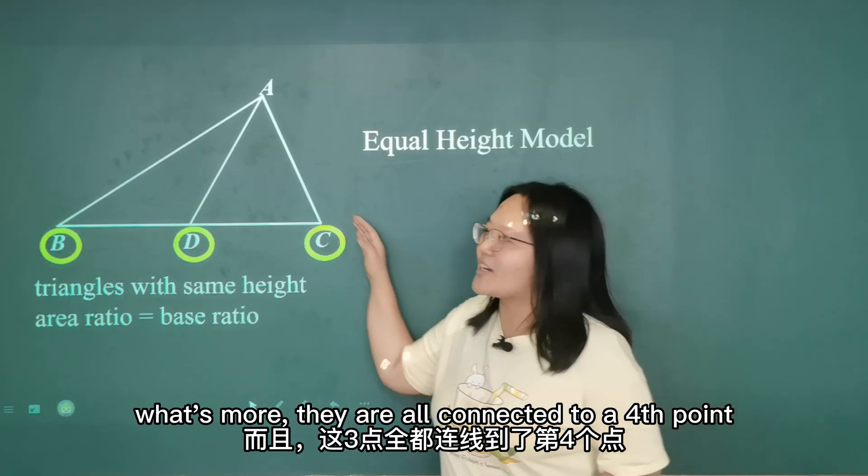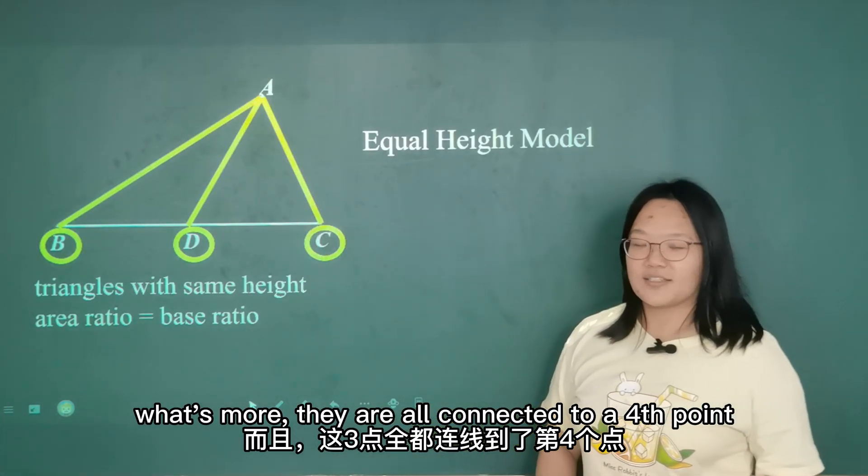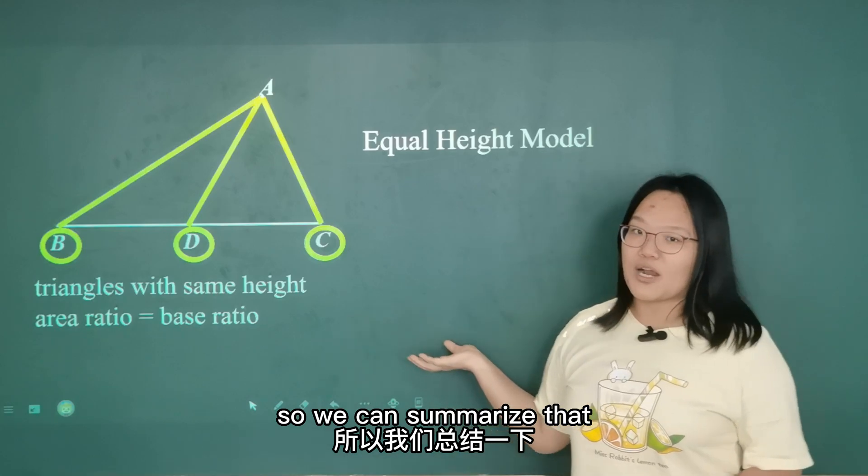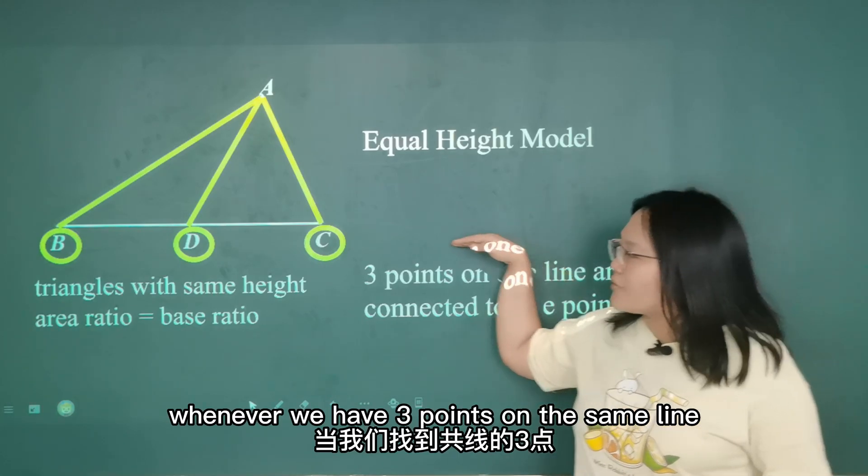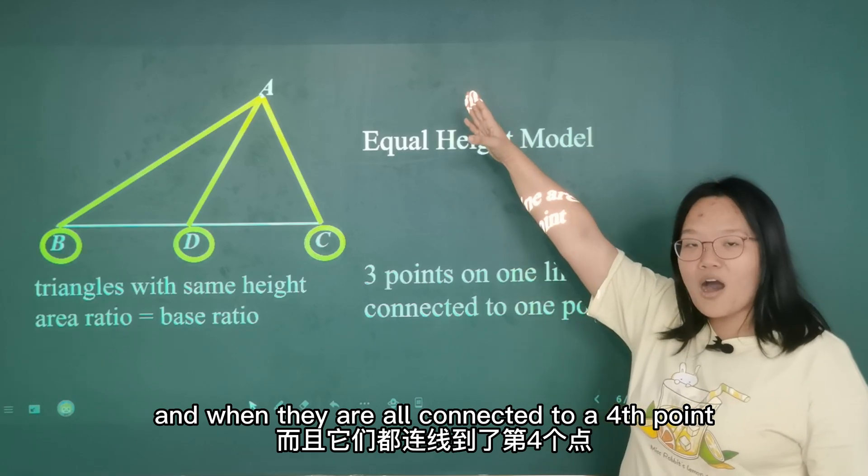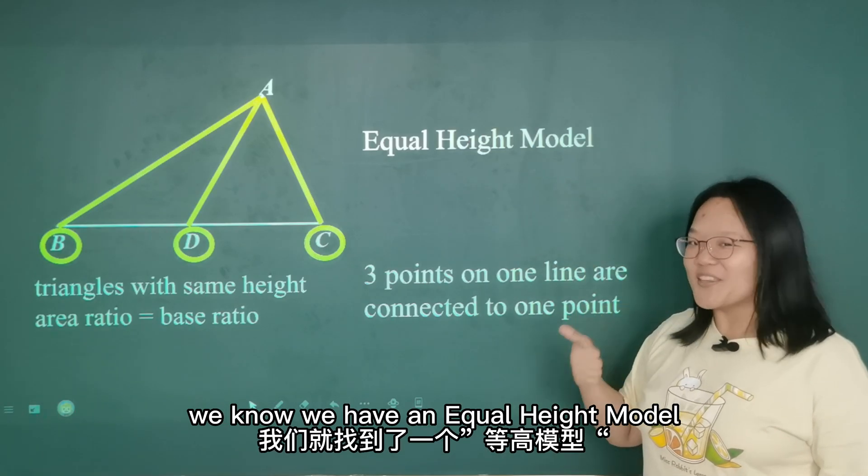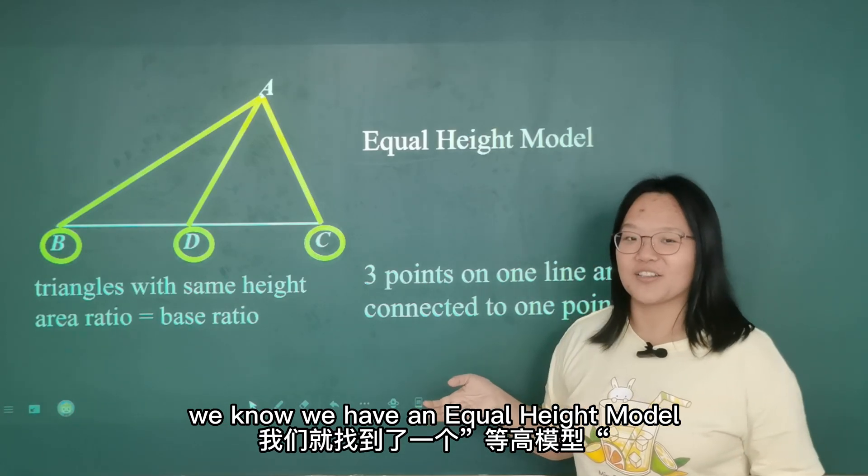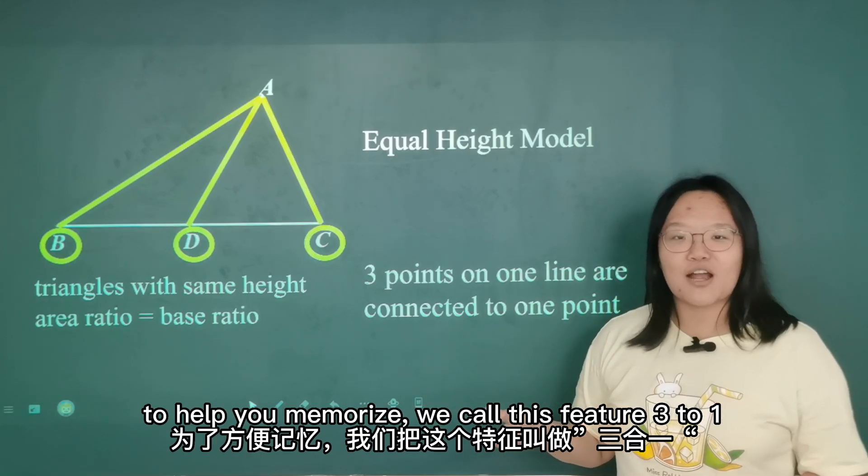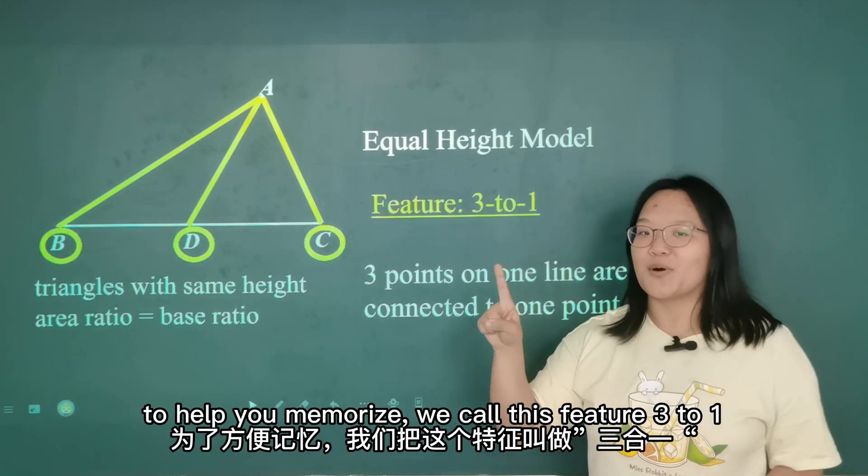What's more, they are all connected to a fourth point. So we can summarize that. Whenever we have three points on the same line, and when they are all connected to a fourth point, we know we have an equal height model. To help you memorize, we call this feature as 3 to 1.